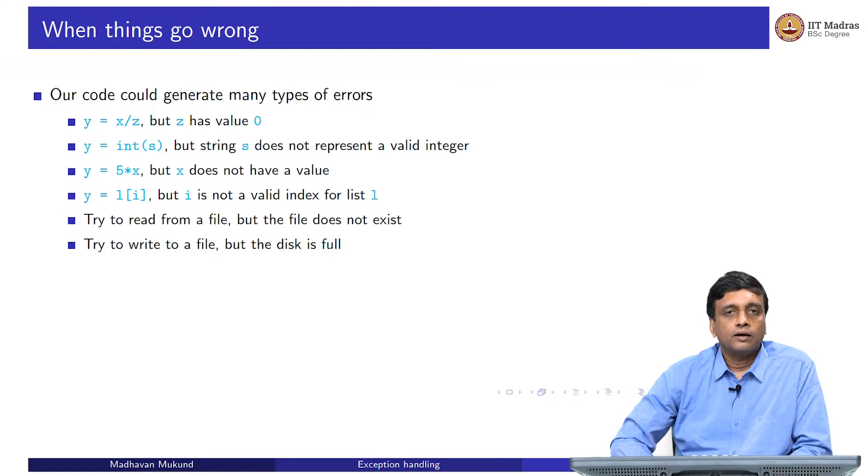When we run code, things go wrong. If all code ran perfectly, it would be a very simple world. Sometimes they go wrong because there is something wrong with what we wrote, the logic is wrong. Sometimes they go wrong because the values are not what we expect. There are many different types of errors that a piece of code could generate.